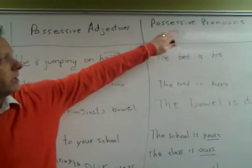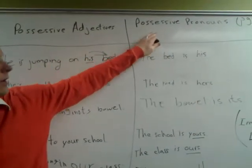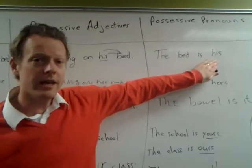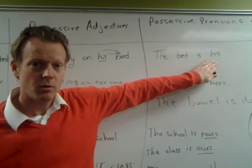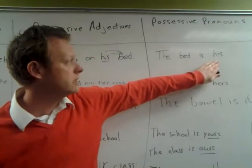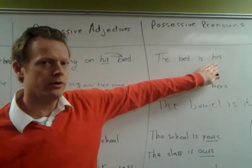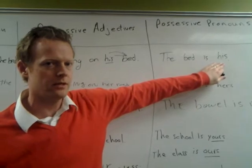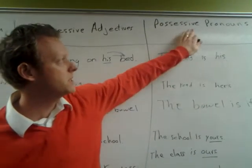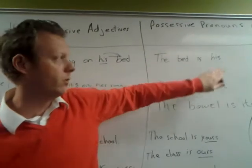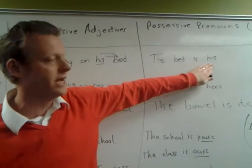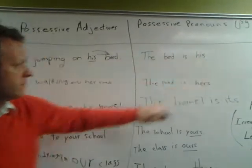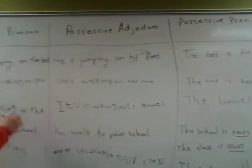Then we jump over to possessive pronouns. 'The bed is his.' Notice that it's all alone — there is no object after 'his.' When the pronoun is by itself showing possession, it's a possessive pronoun. Let's look at the other forms.